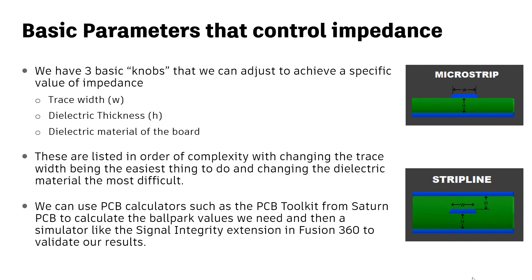The PCB calculator assumes there's no variation in the cross-sectional geometry. However, when you route a trace and maybe you don't see the variation, the signal integrity extension will highlight any change in impedance, and then you can investigate why the impedance changed. Often it will be related to the previous two points — a change in cross-sectional geometry, or something has happened on the return path so it can't follow the signal path closely. And as I mentioned, they're both related.